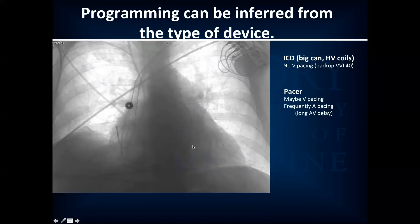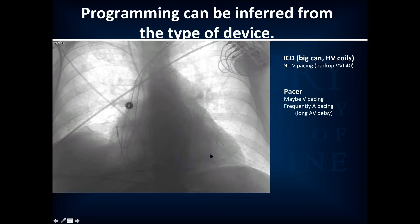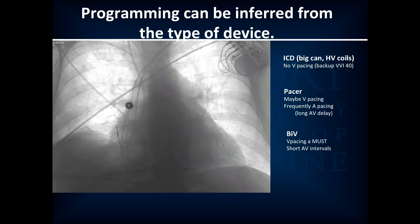This shows a swan, an atrial lead — always characterized by the hook — an RV lead, and then a passive fixation lead out the coronary sinus. You see three pacing leads coming out of this pacemaker, so this is a biventricular pacemaker. BiV pacers want to pace the ventricle, so they have nominally programmed short AV delays, always trying to pace the ventricles — in contrast to dual chamber pacemakers.